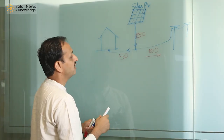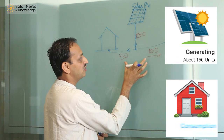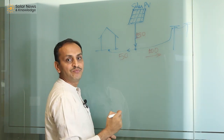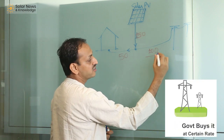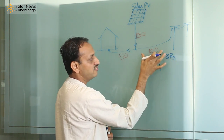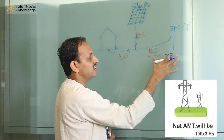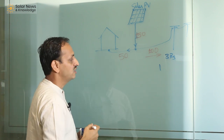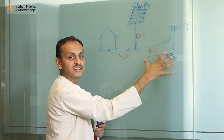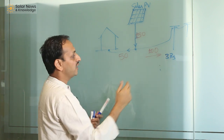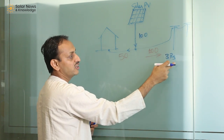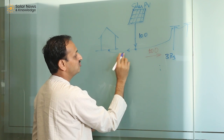In gross metering, when your solar PV generates 150 units and you consume 50 units, the government takes the 100 surplus units at a certain rate — normally let's say 3 rupees per unit. So the money you receive for electricity supplied to the grid is 100 units into 3 rupees. You are not banking this electricity; instead, the amount is adjusted in your bill for that month. When your generation is 100 units and electricity is sold to the grid at 3 rupees, but your consumption is 150 units...